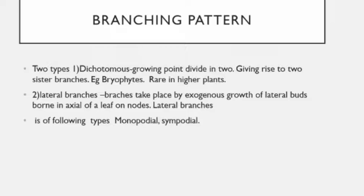In higher plants, Asclepias shows dichotomy. Sometimes the growing point may be damaged and divides into two lateral branches, giving a false appearance of dichotomy. Lateral branching occurs by the exogenous growth of lateral buds born in the axil of a leaf on the nodes. Depending upon the extent of activity of the terminal bud, lateral branching is of the following types: monopodial and sympodial.